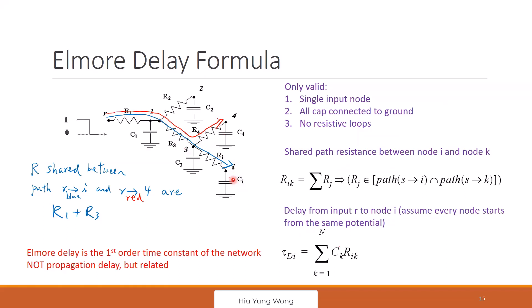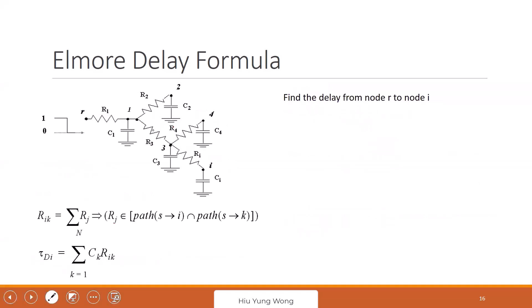That is why we care about the shared resistance — only the shared path has an effect. I may not have explained it very clearly, but that is how it works. Let's try an example: find the delay from r to i.